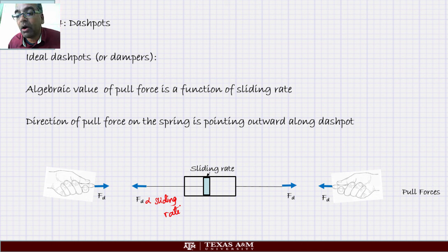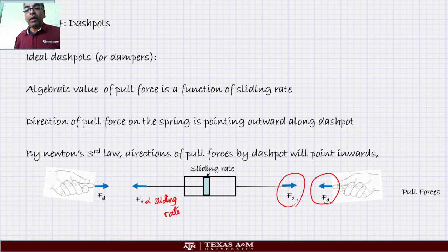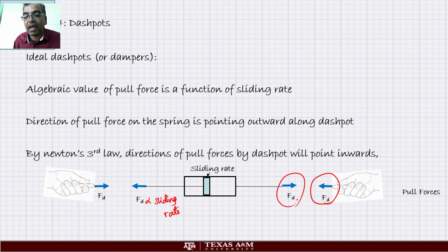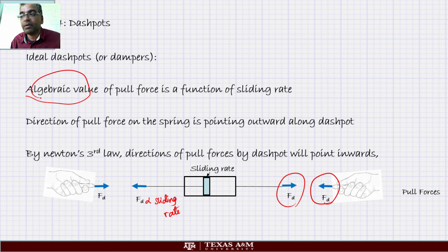The direction of the pull force on the dashpot points outward along the dashpot. By Newton's third law, the pull force on the hand points into the dashpot. The force is proportional to the sliding rate — if the sliding rate is negative, the force will be negative. That's why I said algebraic value, not magnitude. Whenever working with a dashpot or a spring, always pretend it's pulling and let the signs take care of themselves. Checking signs is very important — you don't have to guess whether it's pulling or pushing; just let algebra handle it.